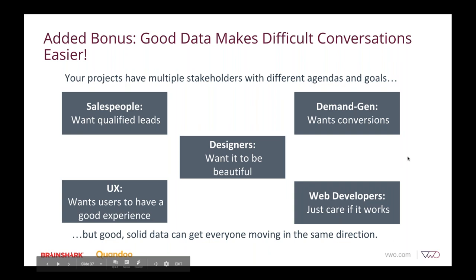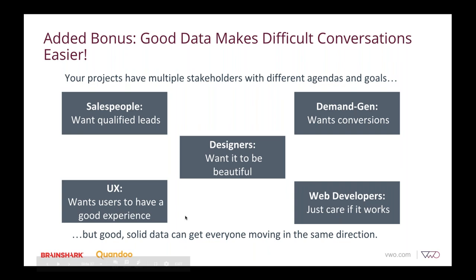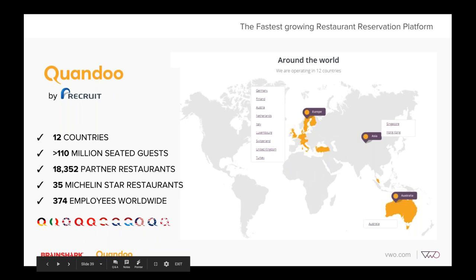With that, I'd like to pass it over to Pablo from Quandu. Thanks a lot, Erica. Hi everyone, and thank you for joining us today. My name is Pablo. I'm the senior product owner for search and book at Quandu. Today I'll be sharing how we do data-driven A/B testing at Quandu. Quandu is a platform that provides B2B services for restaurants to manage reservations and seating plans, and also allows consumers via our B2C products — responsive website and iOS and Android app — to search for restaurants and make reservations online. Consumers can also review their dining experience and manage their reservations.